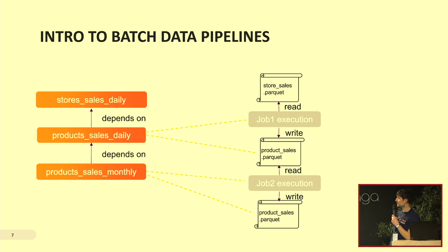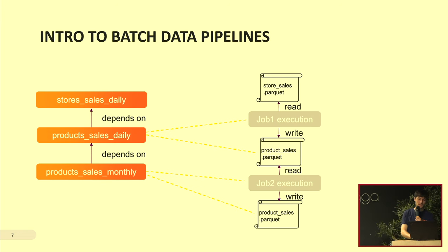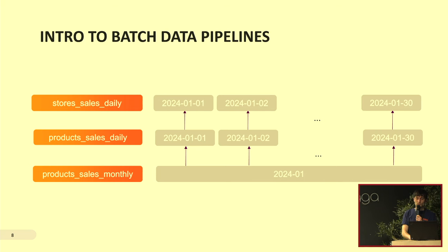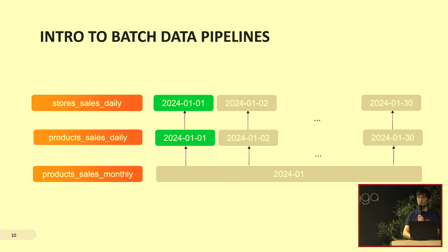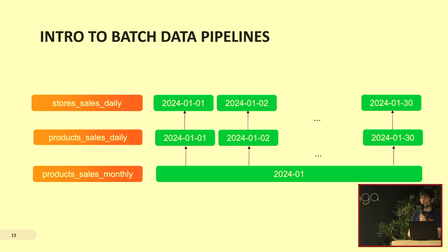In this diagram I put two things together: the job execution — some code that does the transformation — and its output, which is stored somewhere in a given format with a given schema. You can look at this with a calendar view, where data comes in and I compute the aggregation downstream. From the first of January to the end of the month, and then I can compute the monthly aggregate.